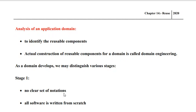Let us try to identify the various stages of evolution. We have stage 1, stage 2, stage 3, and stage 4. In stage 1, the domain is completely immature — we don't have any notations, we don't have any standards, we don't have any components for reuse, we don't have knowledge for reuse. So based on experience, the developer tends to provide a solution to the problem and handle the associated errors.